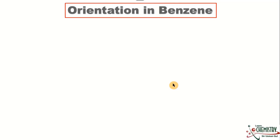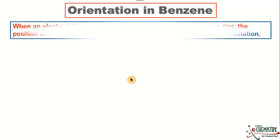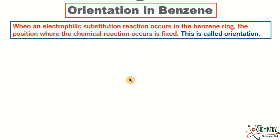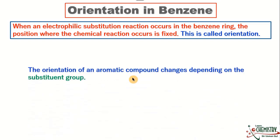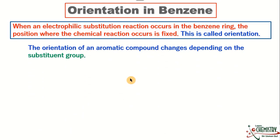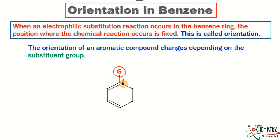In this lesson I will explain the orientation in benzene. Number one: what is orientation? When an electrophilic substitution reaction occurs in the benzene ring, the position where the chemical reaction occurs is fixed — this is called orientation. The orientation of an organic compound changes depending on the substituent group. If we focus on the mono-substituted ring, the position where the first substituent group is attached is called position number one, and moving clockwise, we have the other positions.